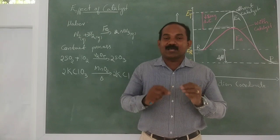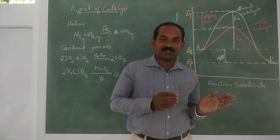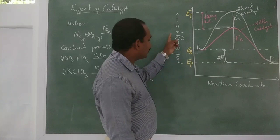The activation complex has partial reactant character and partial product character. If the products are more stable, it decomposes into product. If the reactant is more stable, it goes back to the reactant side. This is explained by plotting potential energy versus reaction coordinates.